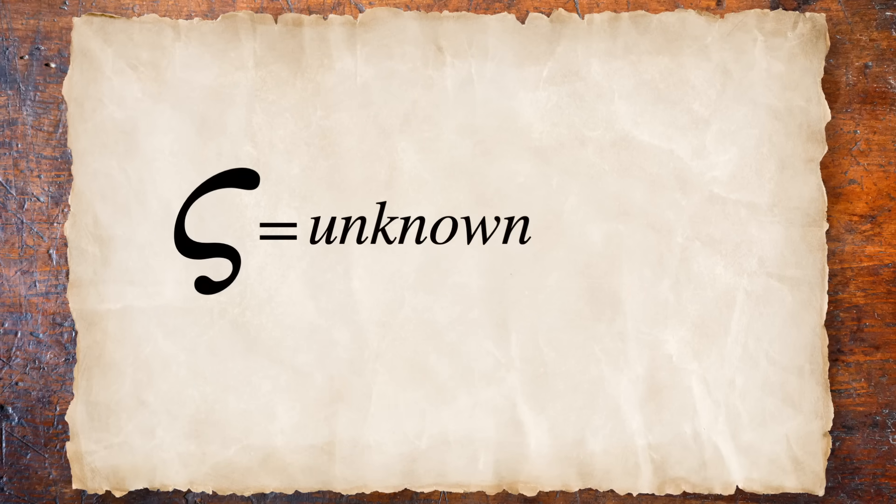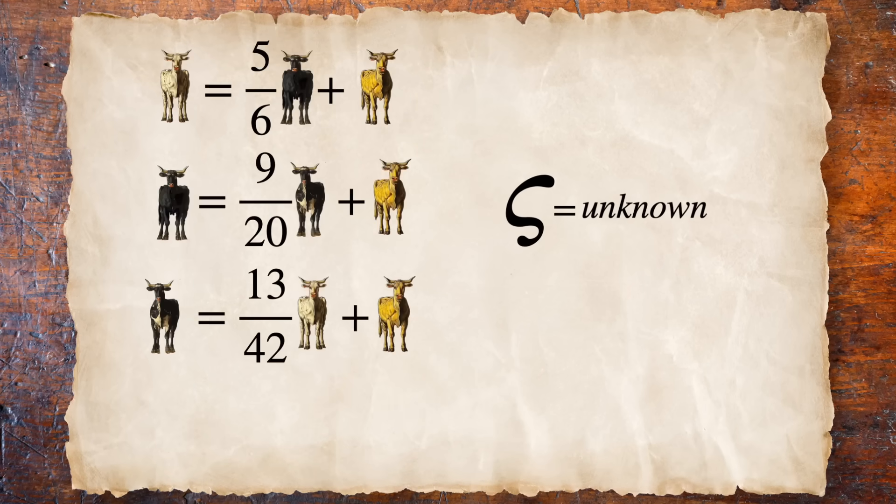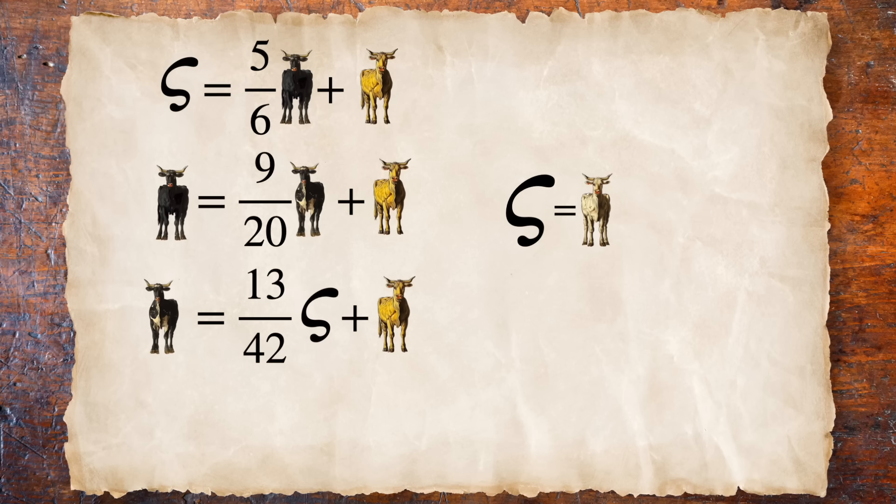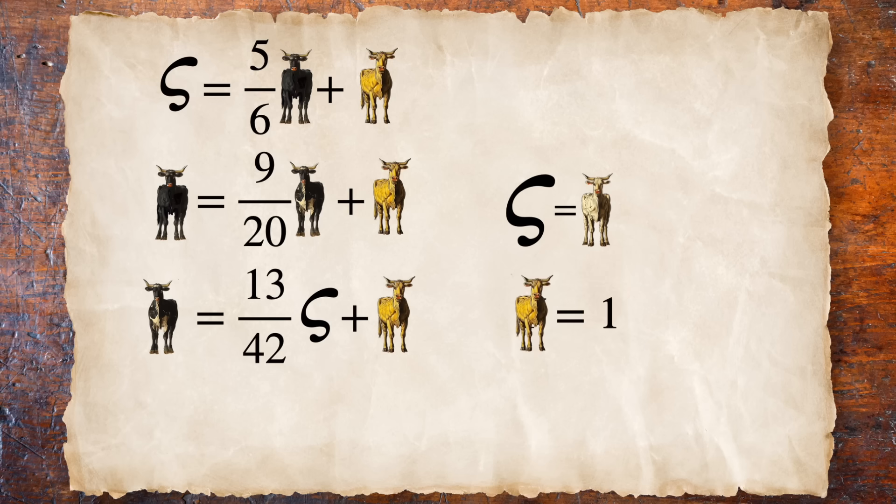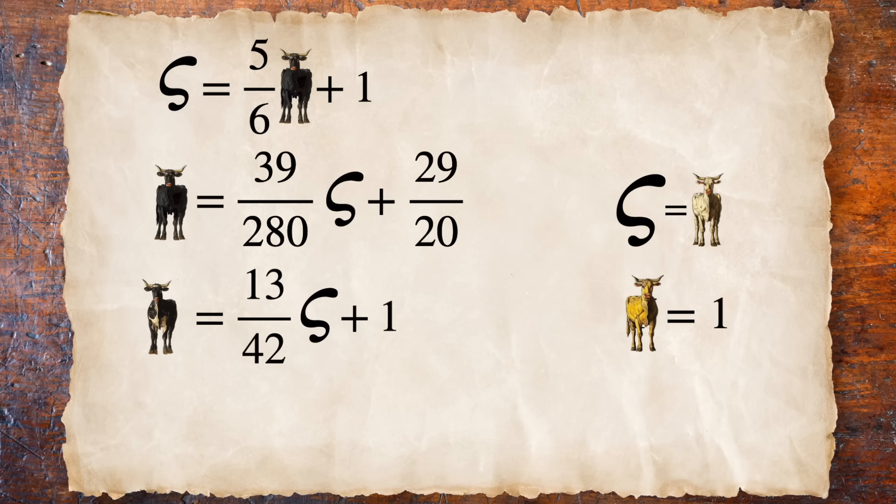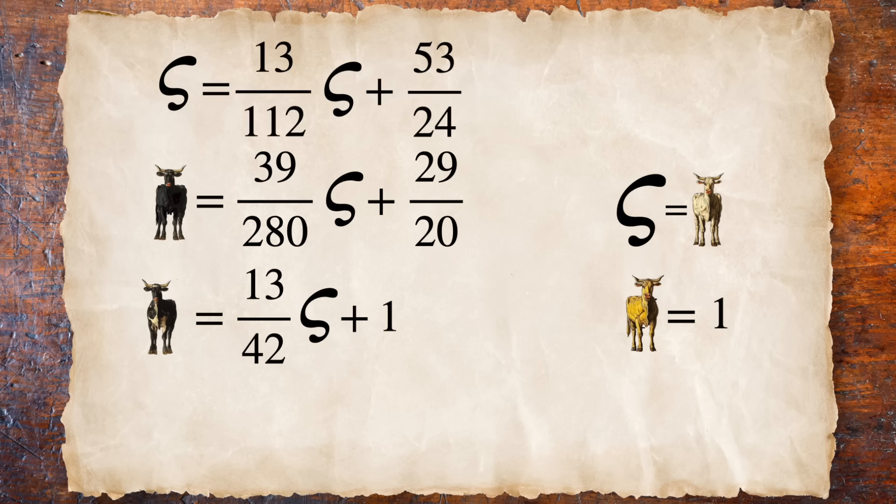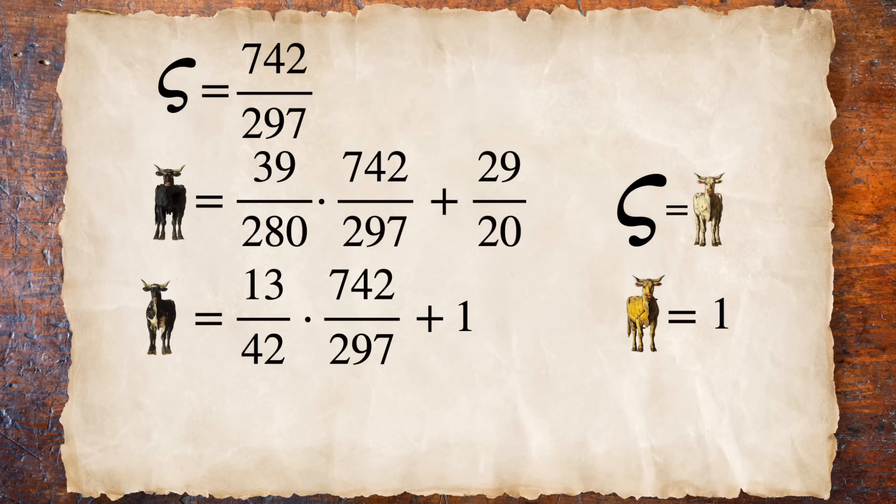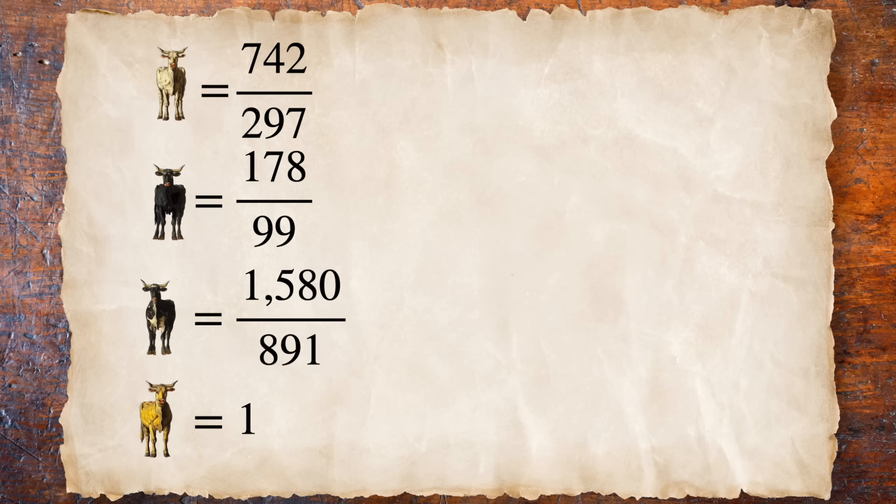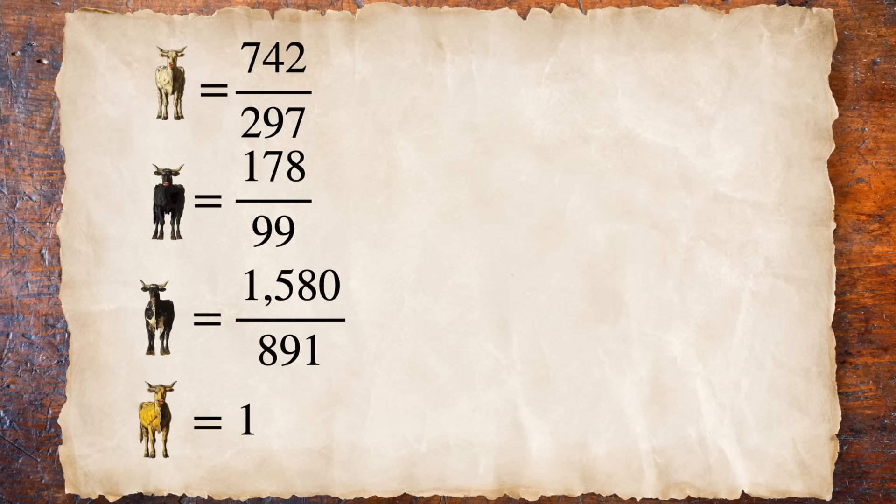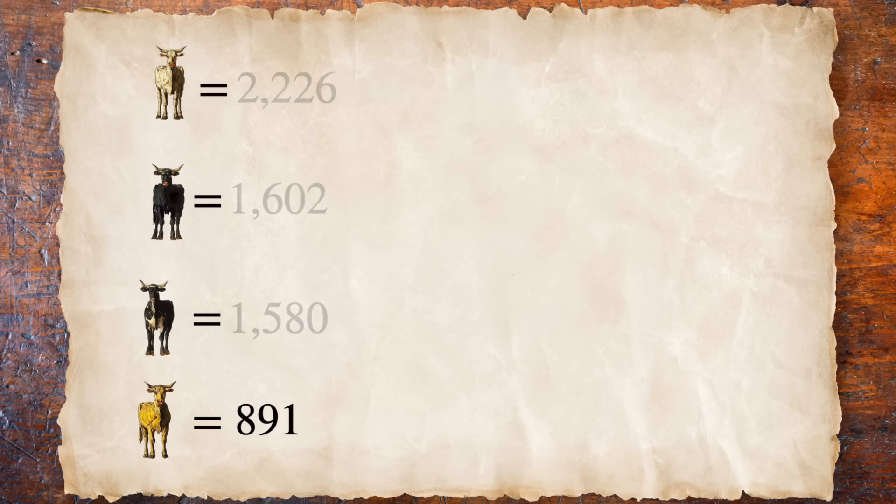It only had a symbol for one unknown value, but we could start by assigning the unknown to the white bulls and assuming an arbitrary number for another, like let's pretend there's just one yellow bull. Then we can use a series of substitutions to figure out the relative sizes of the other groups. In the end, you get these numbers. But of course, you can't have a fraction of a bull, so we need to multiply everything by a least common denominator to get this.